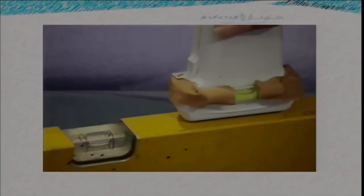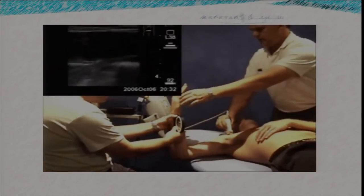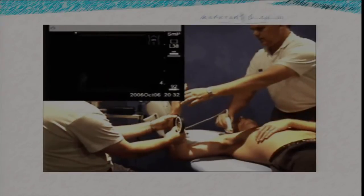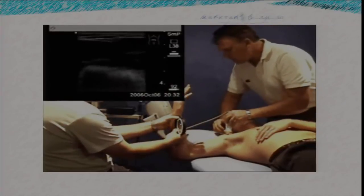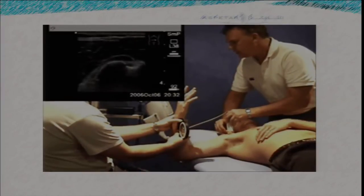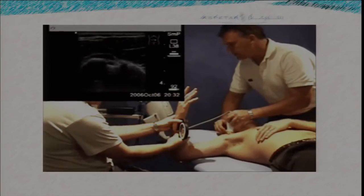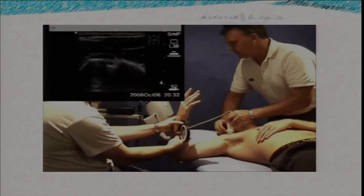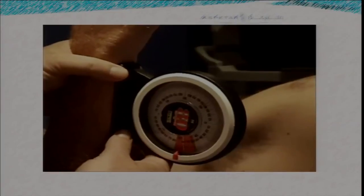Humeral torsion is easy to measure using ultrasound — mercifully sparing us ionizing radiation. It turns out that ultrasound measurement is more accurate than CT scanning and certainly more accurate than X-ray, and it only takes about two minutes. The technique relies on the fact that the long head of the biceps — or more specifically the adjacent greater and lesser tuberosities at their deepest point — maintains a constant angular relationship with the articular surface of the head of the humerus. By standardizing this position and measuring the inclination of the arm, we get a proxy for humeral torsion.